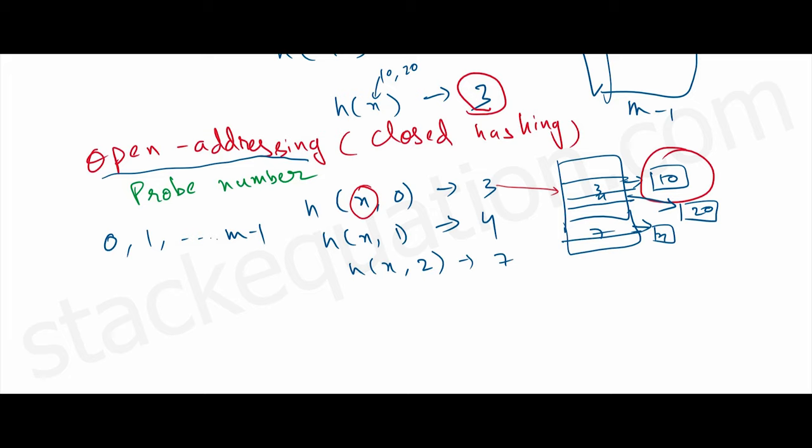But again there is an element present at index 4, so it will take one more attempt. Then it will return 7, and at 7 there is no element, so we'll place x there.